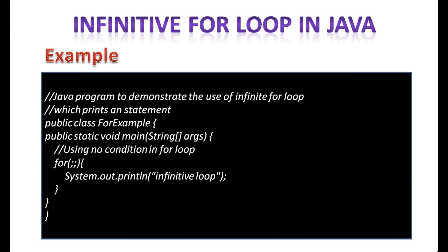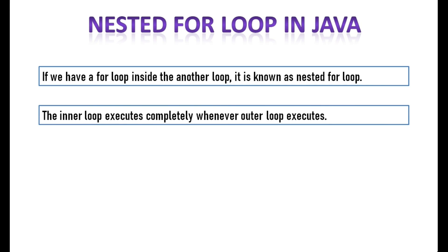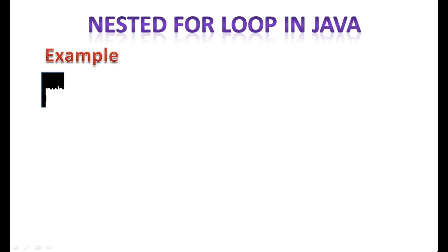Now you need to press ctrl plus c to exit from the program. Java nested for loop. If we have a for loop inside the another loop, it is known as nested for loop. The inner loop executes completely whenever outer loop executes. Look at this example very carefully.